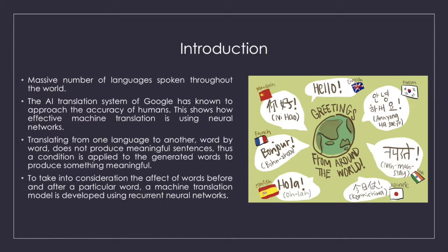Machine translation by human involves a lot of labor and is expensive. Communication between people speaking different languages has become easy through the use of translation APIs and software. The AI translation system of Google has known to approach the accuracy of humans. This shows how effective machine translation is using neural networks.